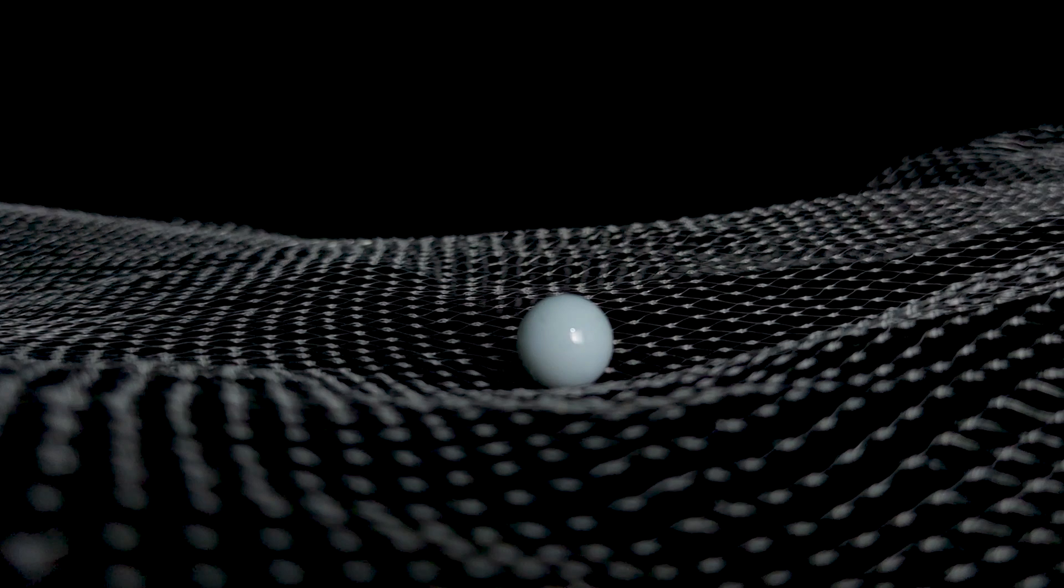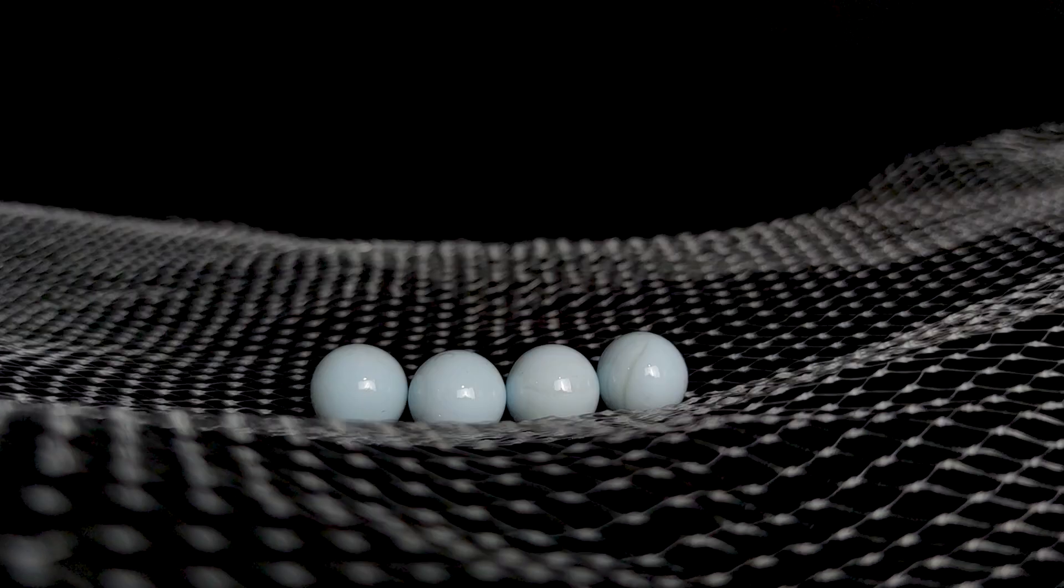But since electrons have mass, and according to general relativity, mass curves spacetime, does that mean that there's multiple values of curvature at the same time? Well, the thing is, general relativity says nothing about superposition.